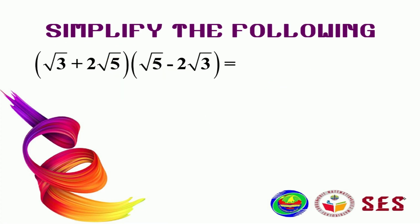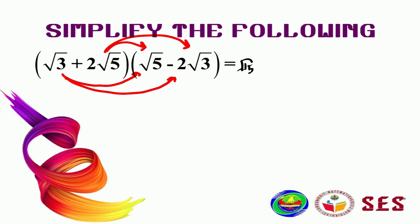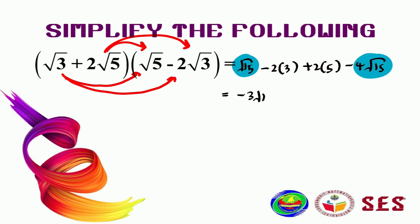Now let's upgrade — this time you are on your own. Pause this video and try to expand these two brackets first, then simplify. Hint: expand by multiplying each term with every other term. Expanding gives you square root of 15 minus 2 multiplied by 3 plus 2 multiplied by 5 minus 4 square root of 15. Those with the same sets can be combined: minus 3 square root of 15 minus 6 plus 10. So our final answer is 4 minus 3 square root of 15.